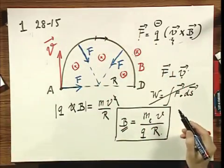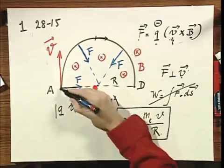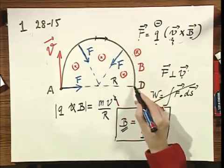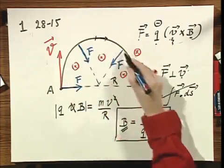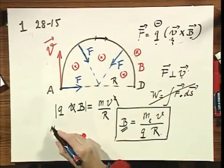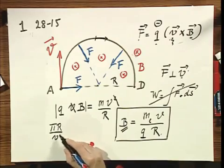The time for half a circle, the time to go from A to D, is obviously pi r divided by that velocity. So I don't think that that could be a problem at all.